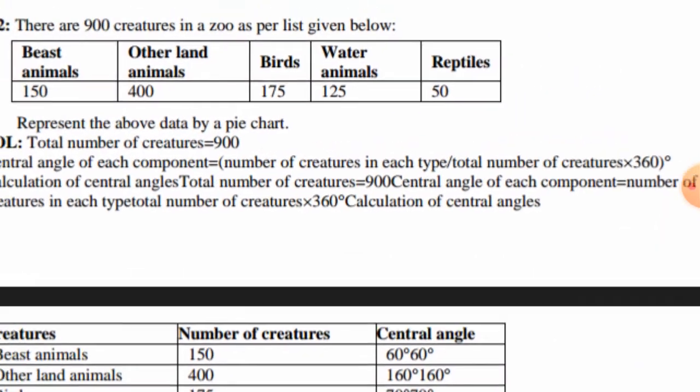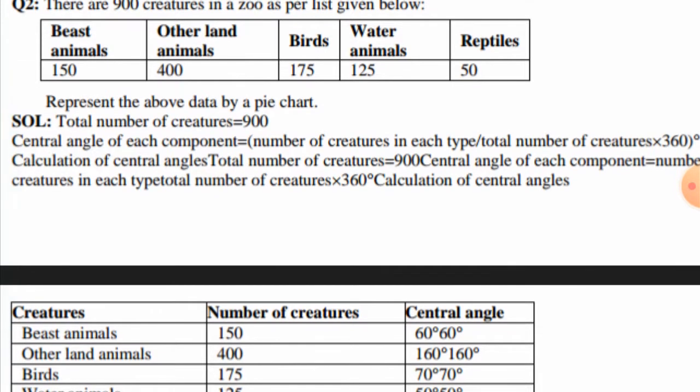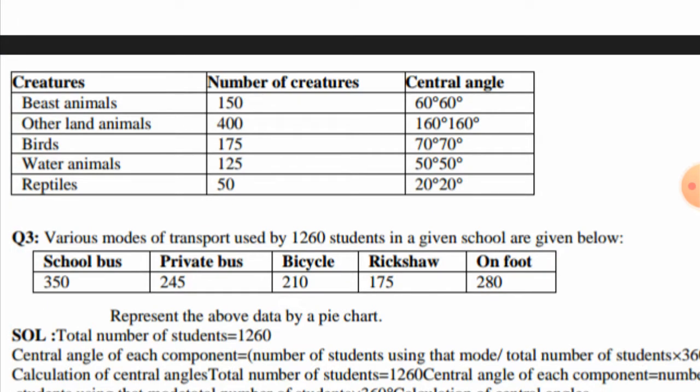In question number 2, there are 900 creatures in a zoo. The list is: beast animals 150, other land animals 400, birds 175, water animals 125, reptiles 50. We have to represent this as a pie chart. Total creatures are 900.